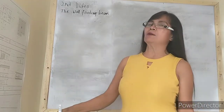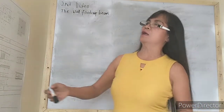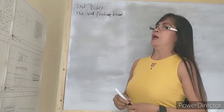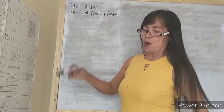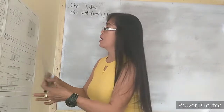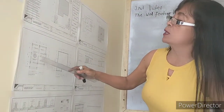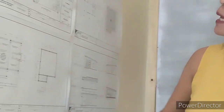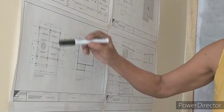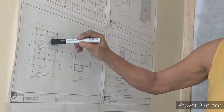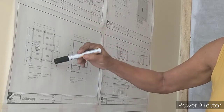I continue now the tutorial video about the estimates of materials. The lesson for today is to solve the whole wall footing beam. The wall footing is the whole length where the CHB were lying. We have a wall footing in the CR — the comfort room — and the length of the whole footing.